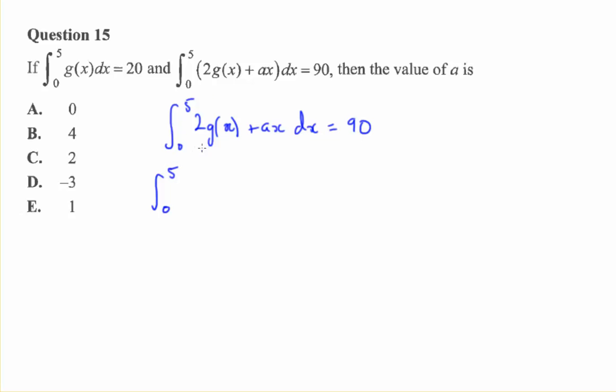So we're integrating from zero to five of two times g of x dx plus zero to five of ax dx and we know that equals 90.